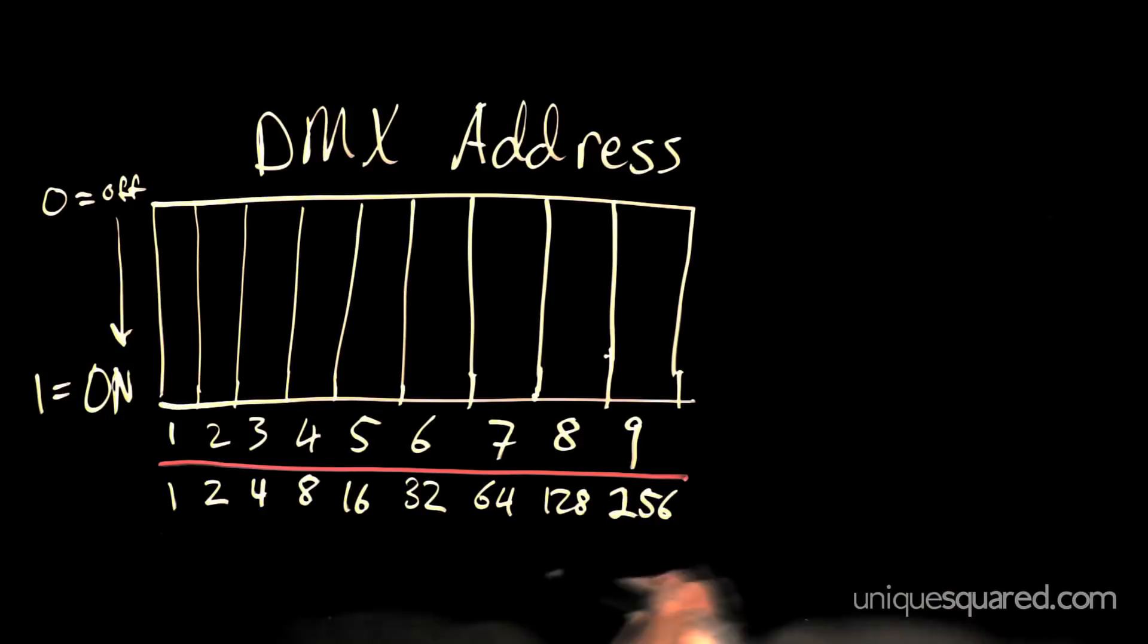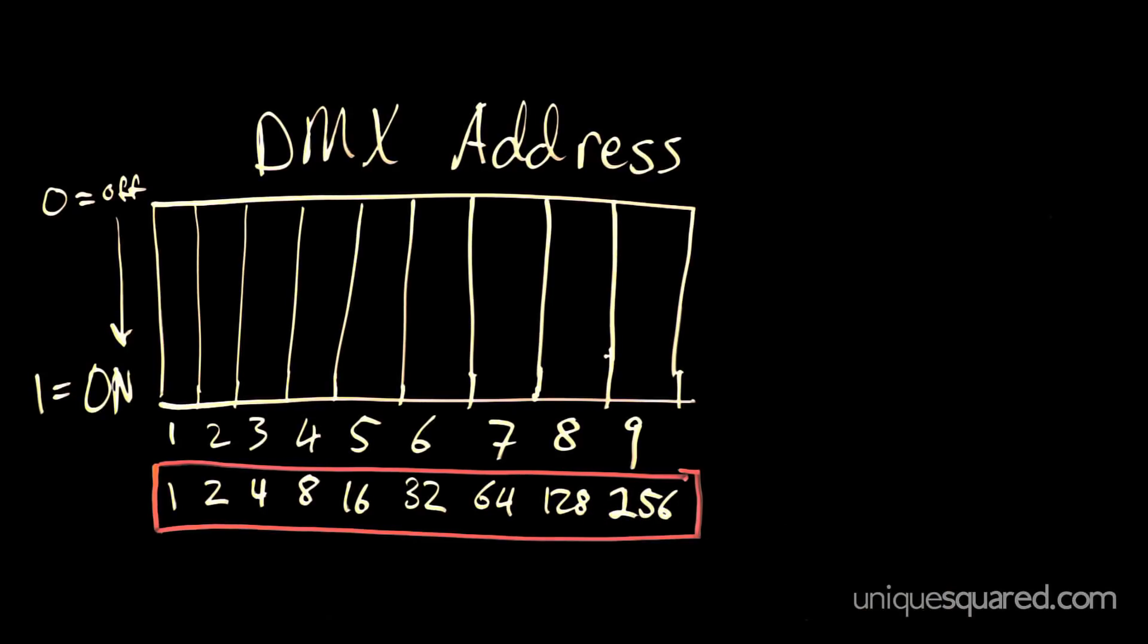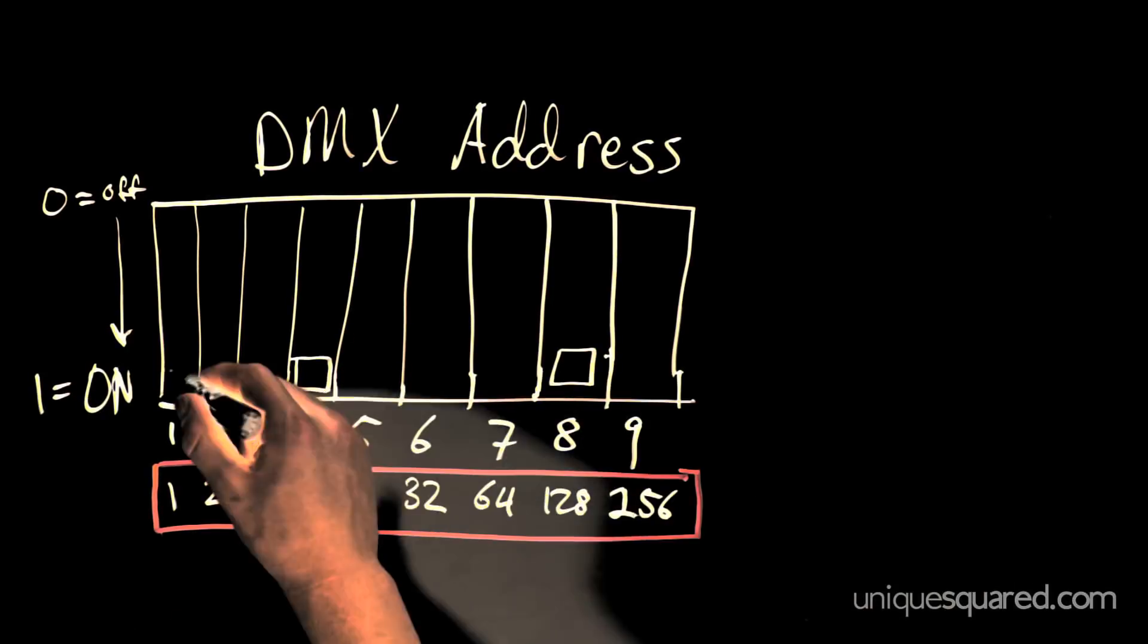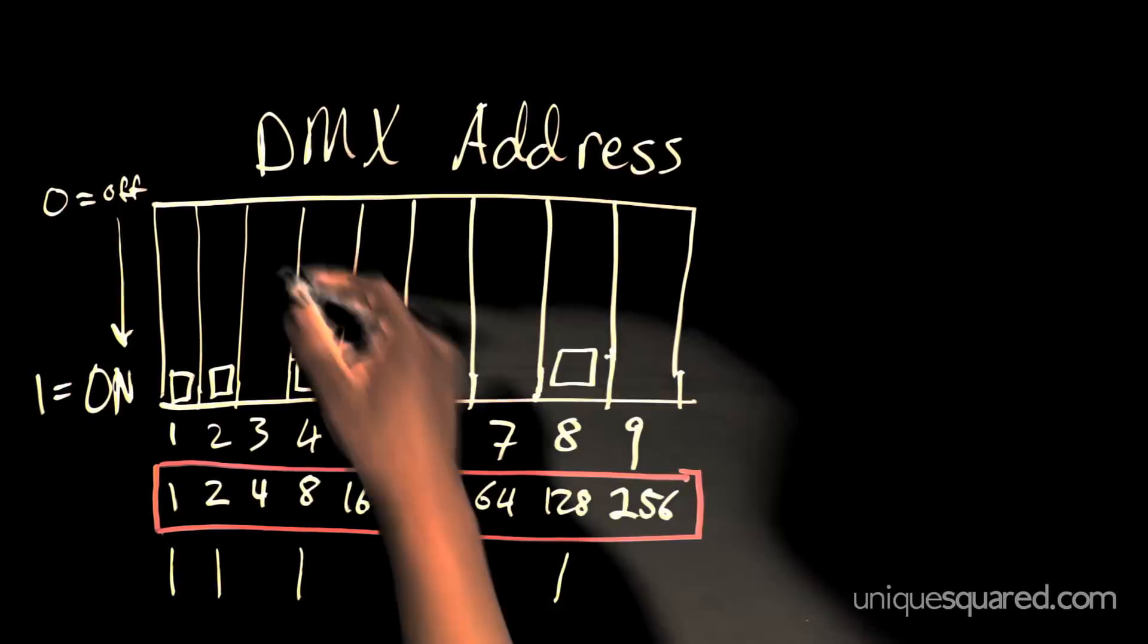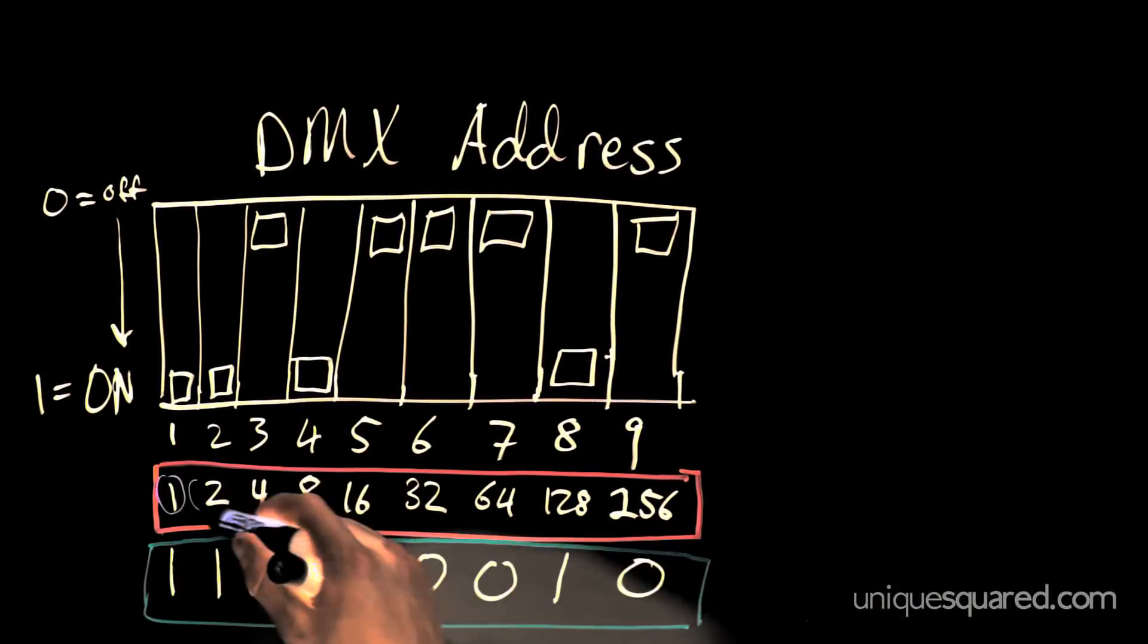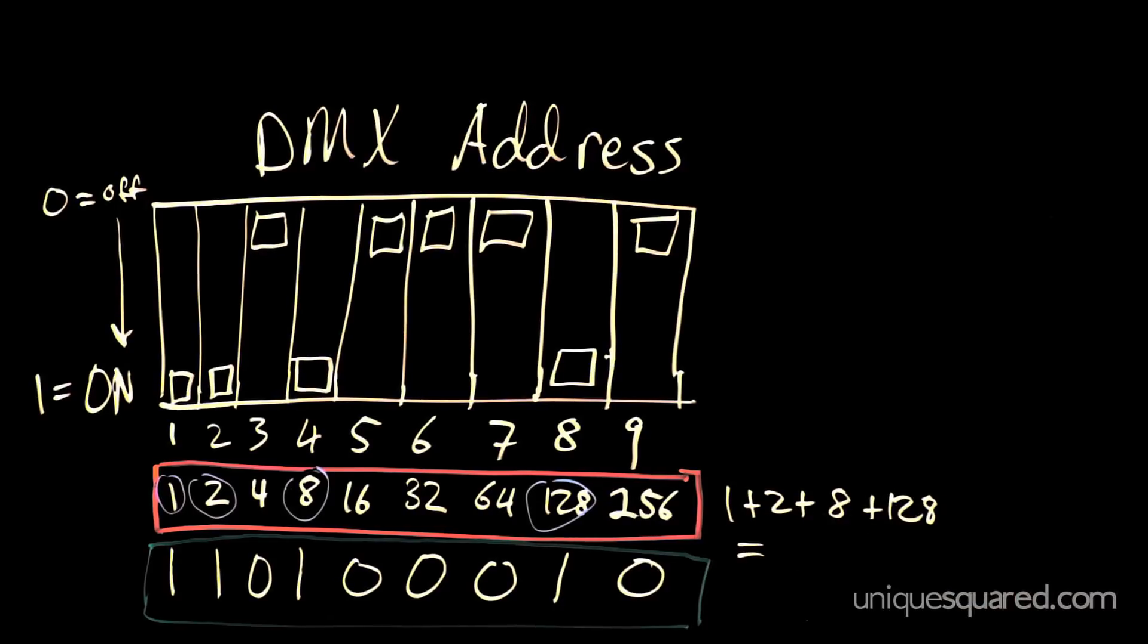So, I set this binary number with my DIP switches. I switch these four switches, which correspond to the numbers 128, 8, 2, and 1. Add those together, and I see that my DMX address will be 139. That's pretty simple, right?